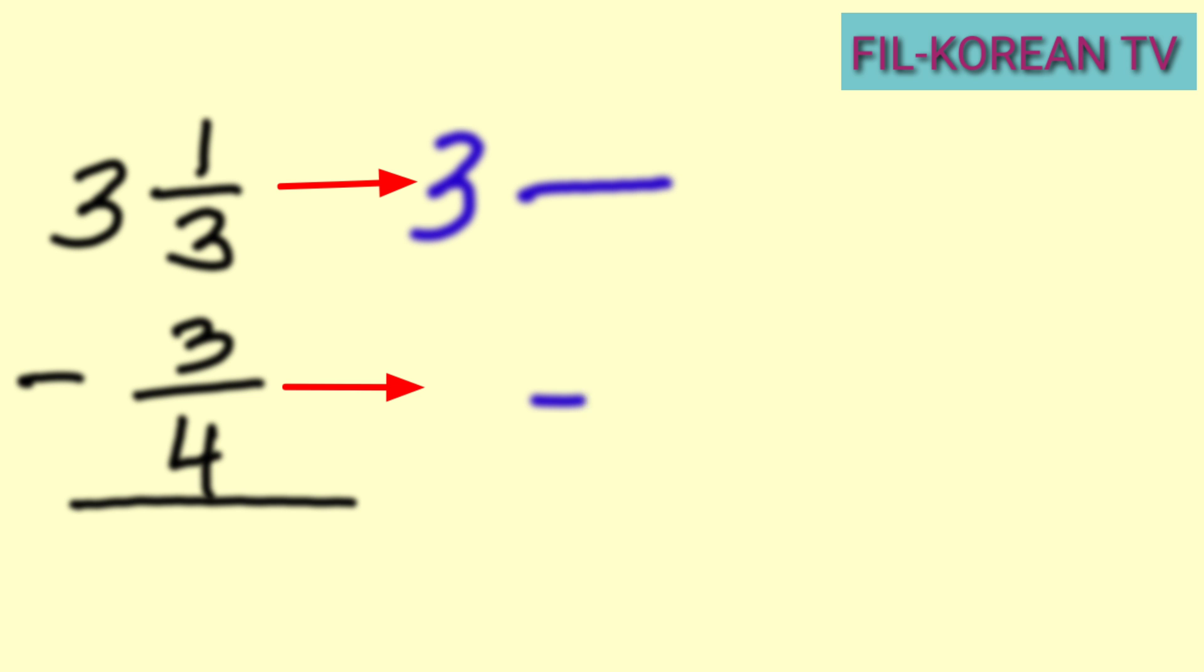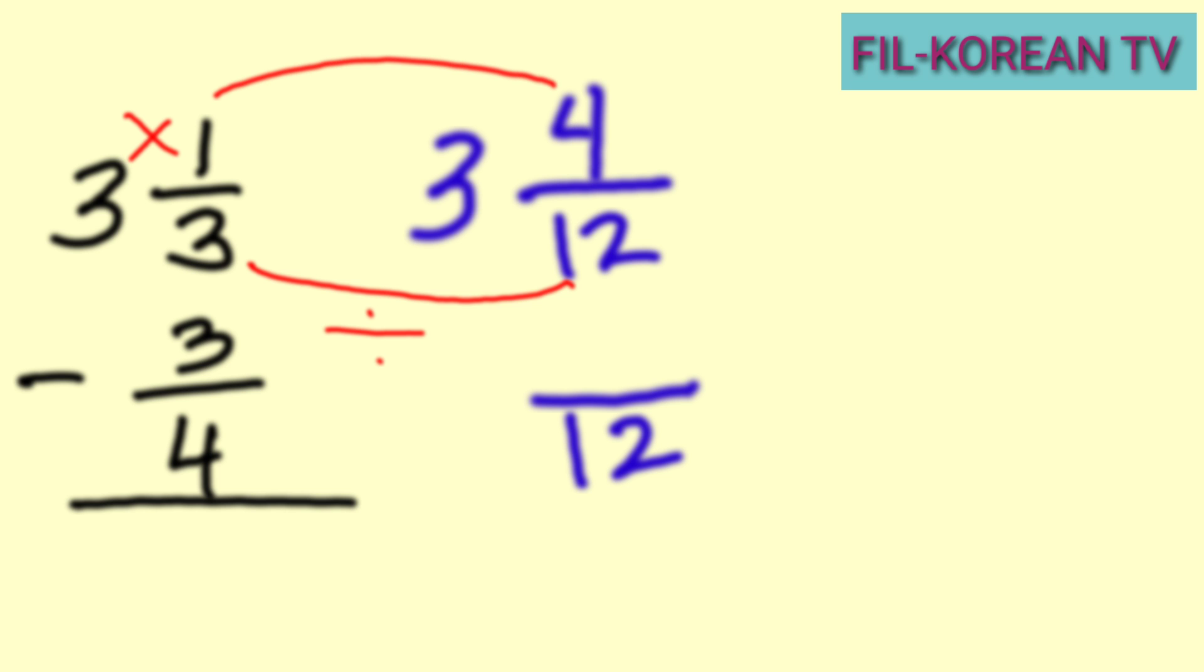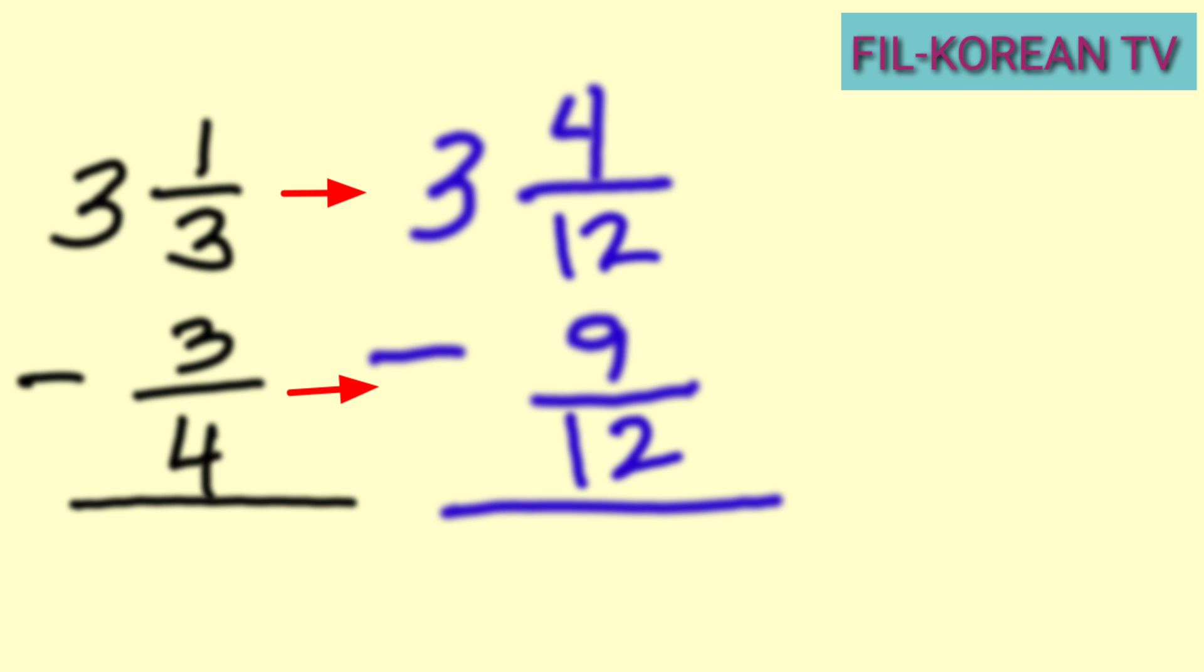The LCD of 3 and 4 is 12. Then, 12 divided by 3 equals 4 times 1 equals 4. Do the same in the subtrahend. 12 divided by 4 equals 3. 3 times 3 equals 9. The fractions now are similar fractions.